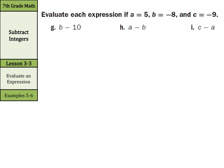We can also evaluate expressions using integers. For B minus 10 where B equals negative 8, write the problem as negative 8 minus 10. Keep change opposite: keep negative 8, change subtraction to addition, and the opposite of positive 10 is negative 10. Same signs — both negative — so add: negative 18.